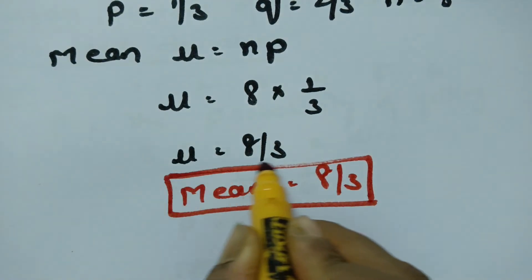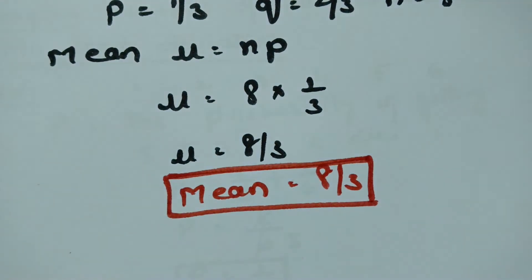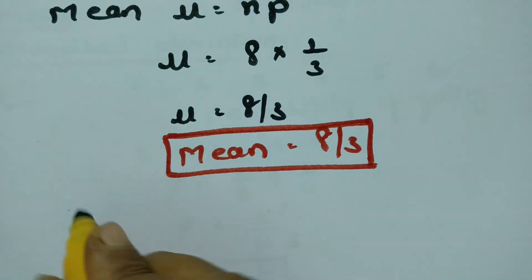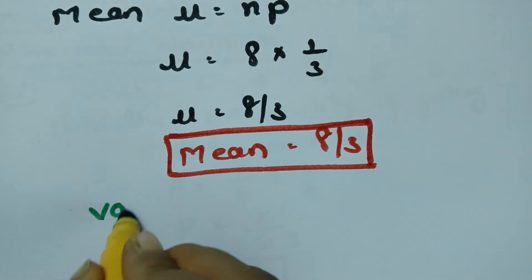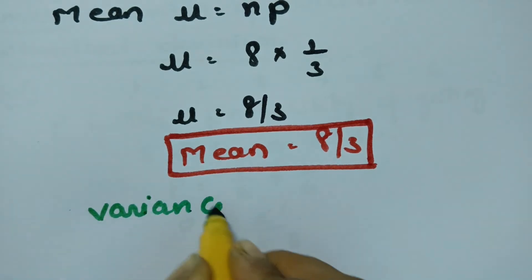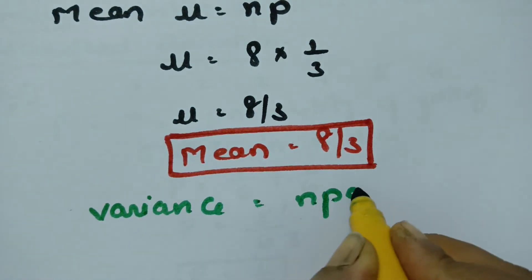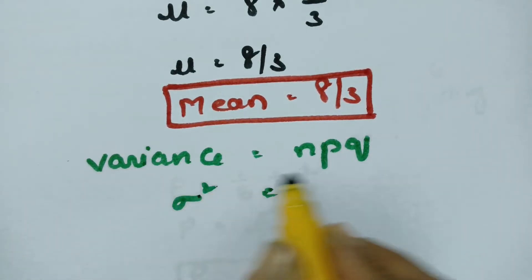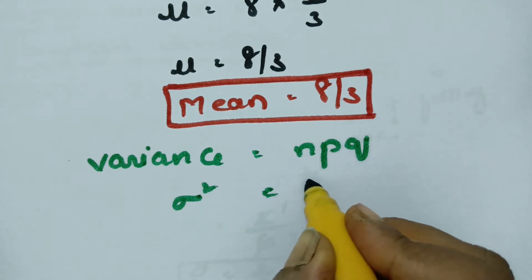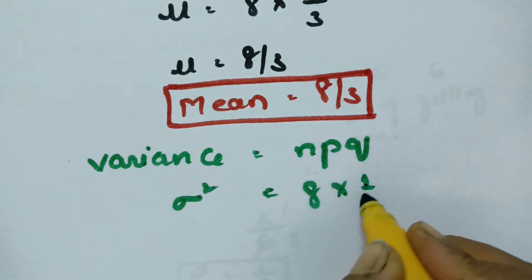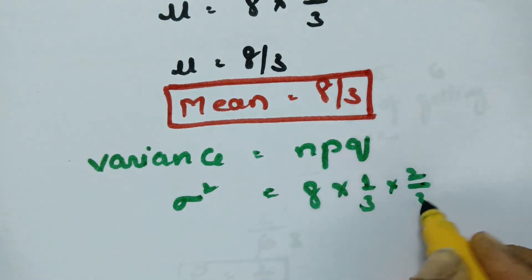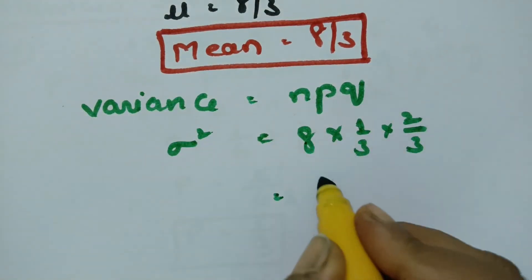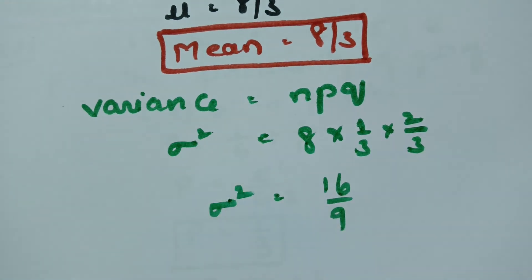Next, we calculate the variance. The variance formula is N into P into Q, denoted as sigma squared. So variance equals 8 into 1 by 3 into 2 by 3, which gives 16 by 9. This is our variance.